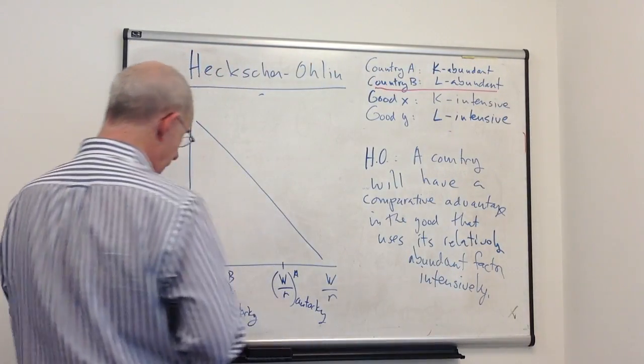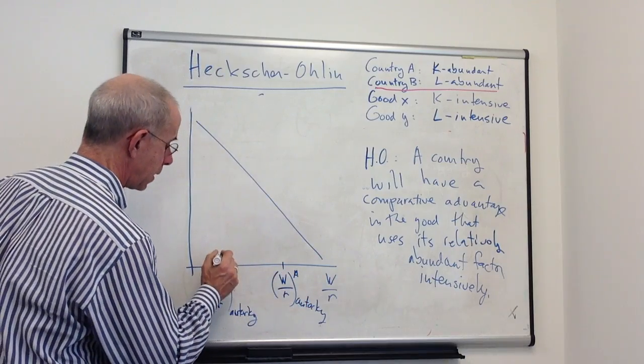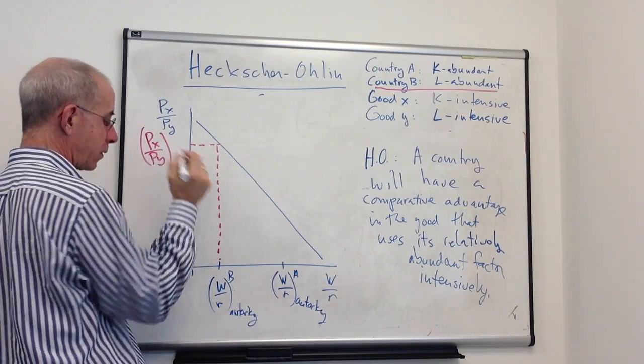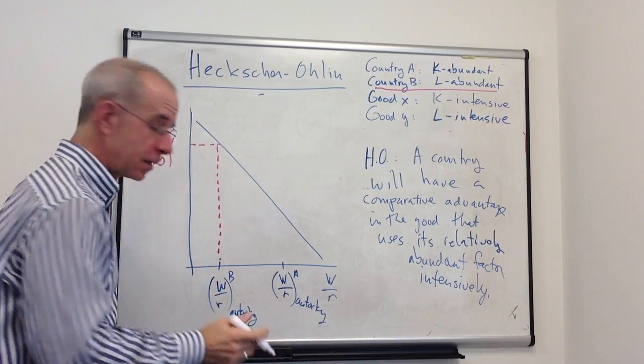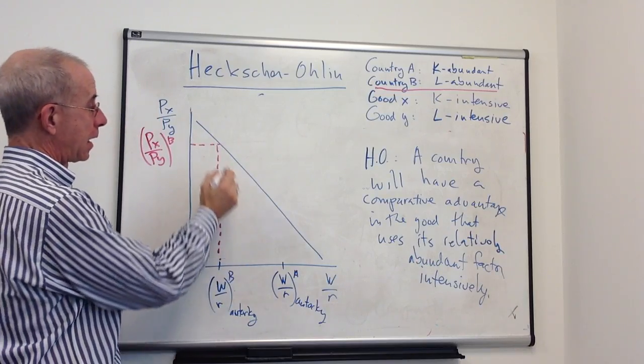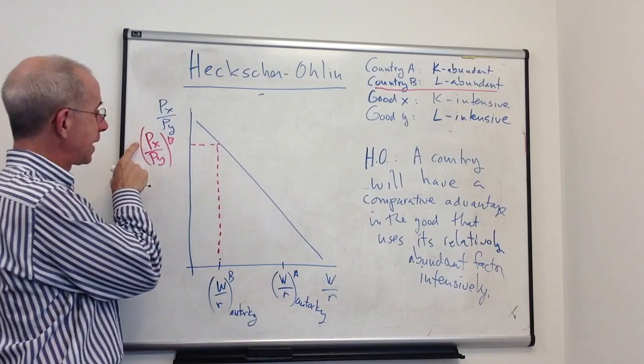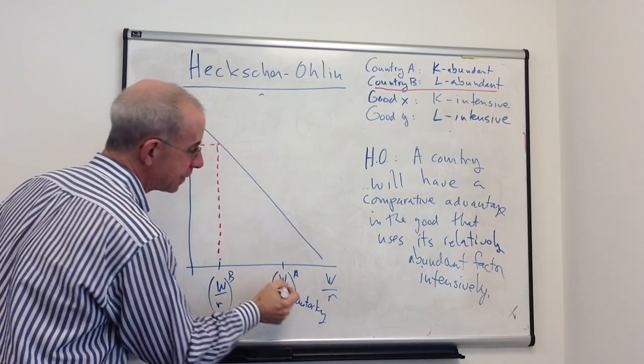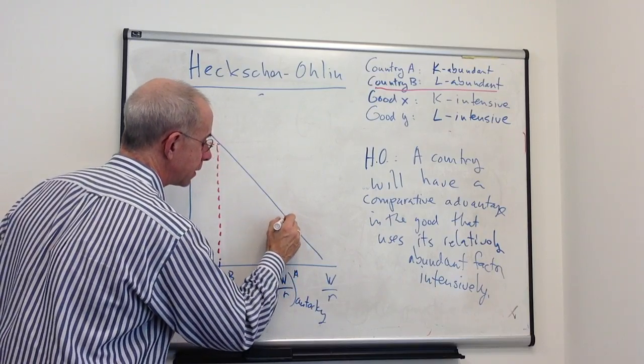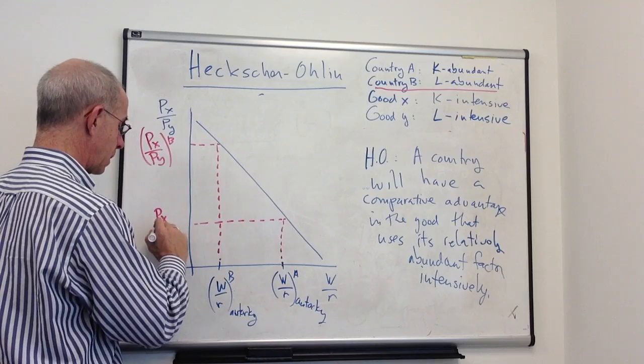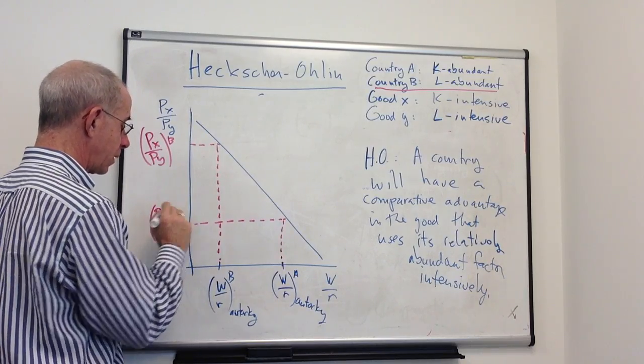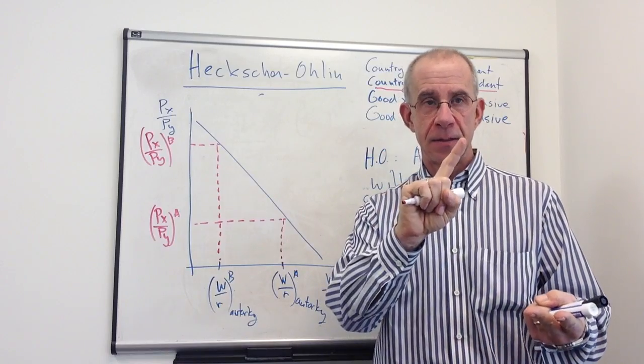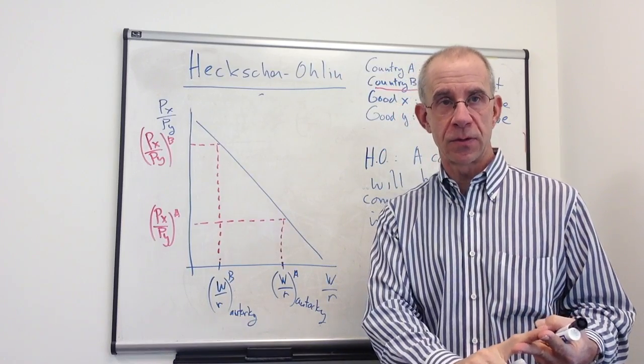So here are these input costs, and then we have associated with that relative prices of the final goods. So in autarky, the cheap labor and expensive capital is going to make X relatively expensive, in other words Y relatively cheap. The expensive labor and cheap capital in the other country is going to make X, the capital intensive good, cheap. So again, that intuition: cheap inputs of a particular type means cheap outputs that intensively use that cheap input.